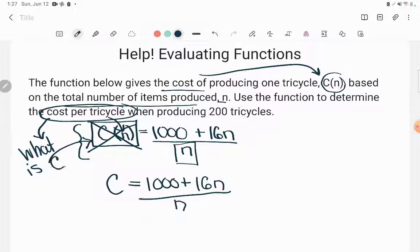When producing 200 tricycles. Well, what are tricycles? Tricycles are the items I'm producing. And look what it says. The total number of items produced is represented by the letter n here. So what am I doing? I'm giving you n. So I'm just saying find what C is when I turn n into 200.